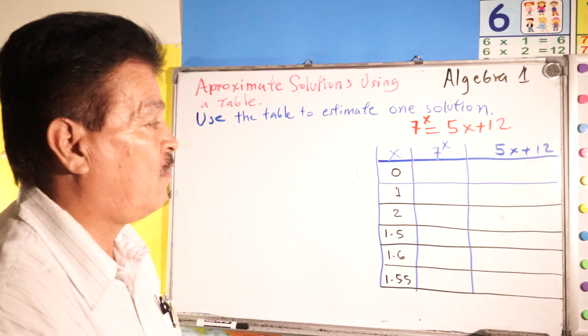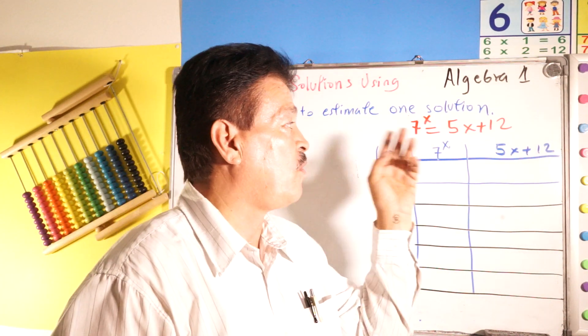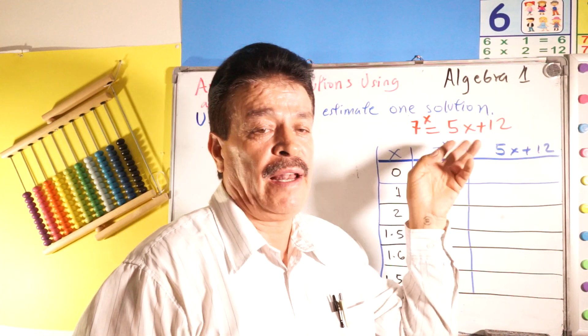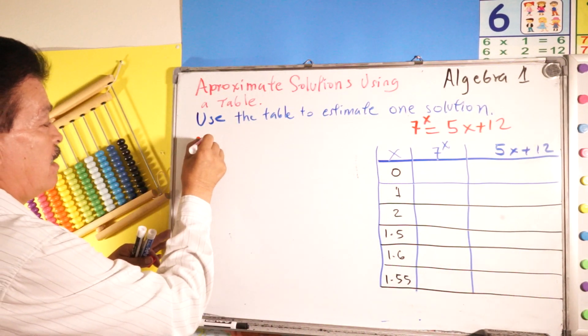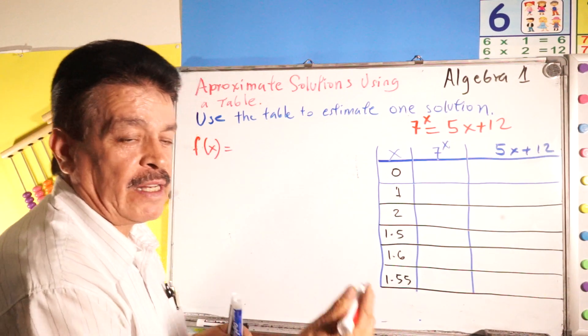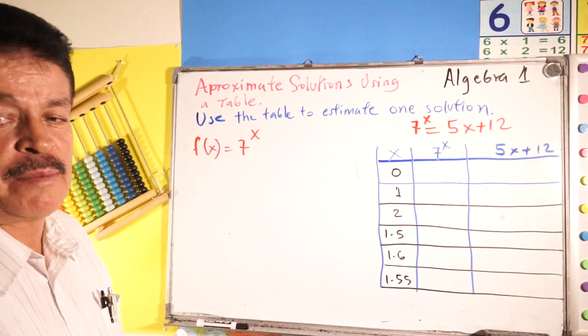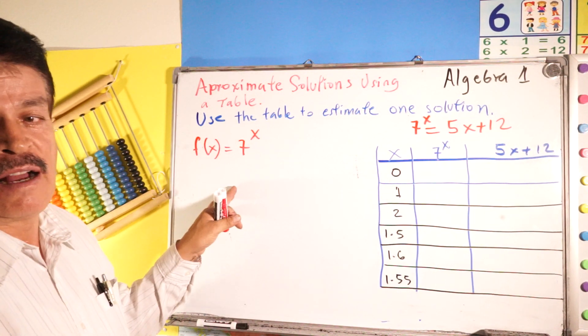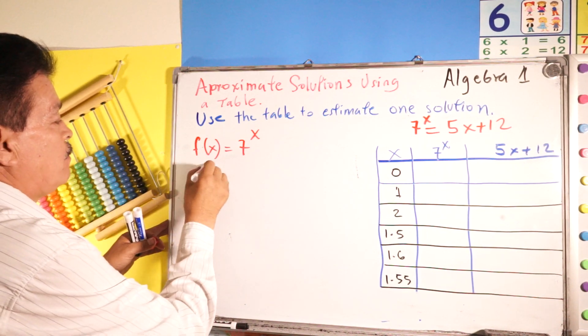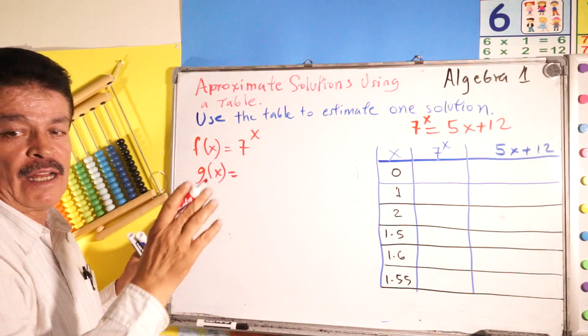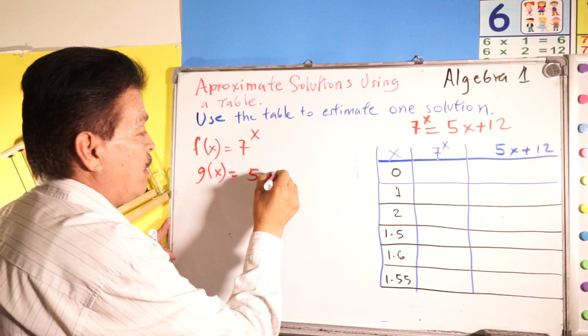For example, if we have 7 to the X power equals 5X plus 12, F of X in this case equals 7 to the X power. Similarly, you can think about the function G of X will be 5X plus 12.